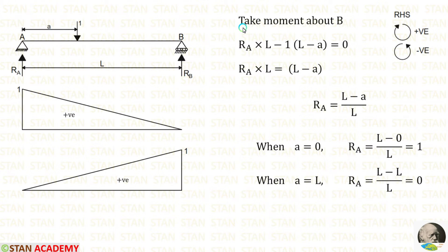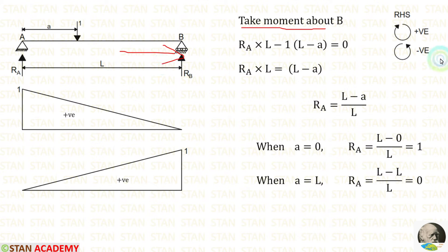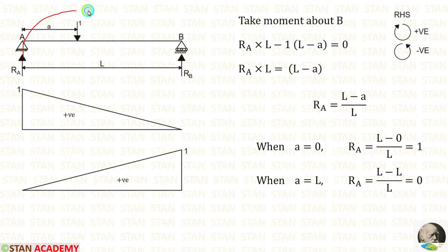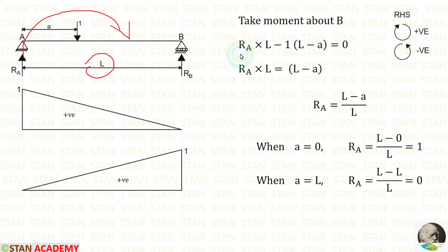First, let us calculate R_A. For that, we are going to take moment about B. In this case, we are moving towards the right-hand side. Clockwise will be positive, anticlockwise will be negative. The vertical reaction R_A is acting towards point B in the clockwise direction, so it will be positive, and the distance is L. So, R_A into L.